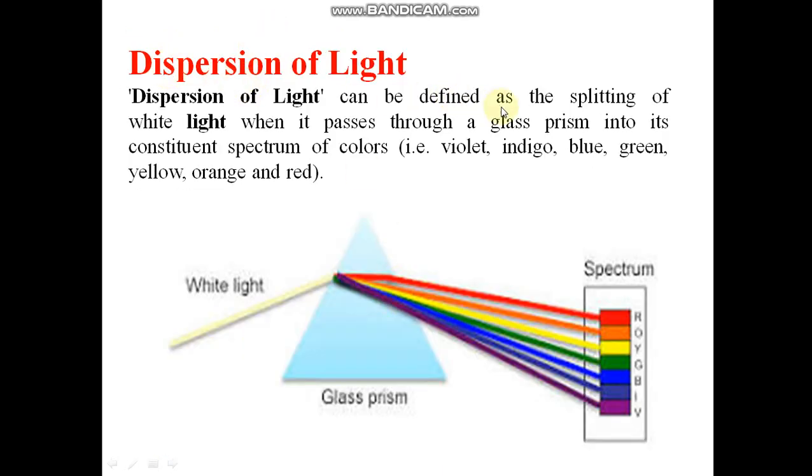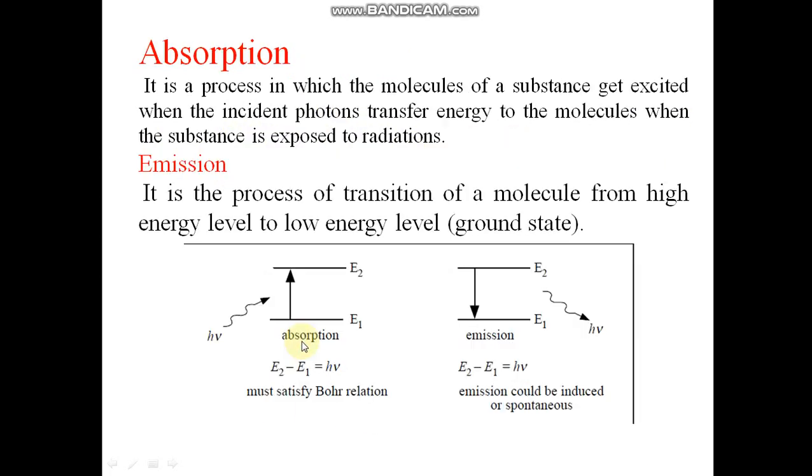Dispersion of light can be defined as splitting of white light when it passes through a glass prism into its constituent spectrum of colors: violet, indigo, blue, green, yellow, orange and red.